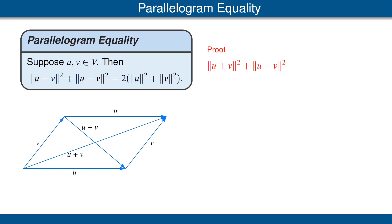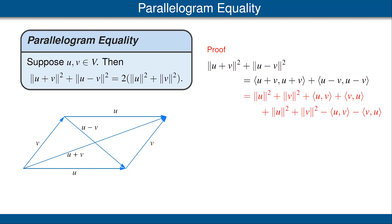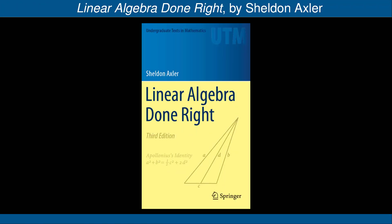Let's look at the proof of the parallelogram equality. We start with the left-hand side, ‖u + v‖² + ‖u − v‖², and write each norm squared as the vector's inner product with itself. Expanding using the additivity property gives the equation shown in red. There is some nice cancellation, giving us the result quite easily. This concludes part two of the video on inner products and norms.